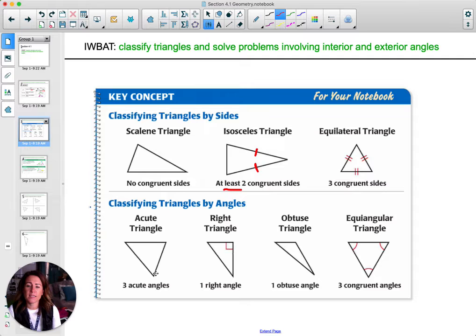Classifying by its angles, an acute triangle has all three of its angles being less than 90 degrees. So all three of these are acute angles. In a right triangle, you only have one angle that's a right angle, and then the other two are acute. So you'll see one right angle marked with the box. Obtuse has one angle that is bigger than 90 degrees.